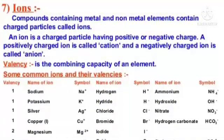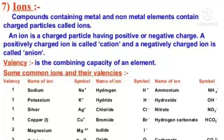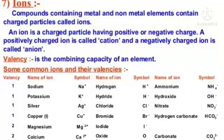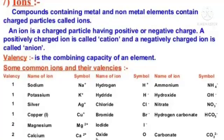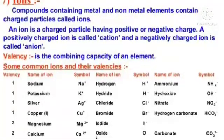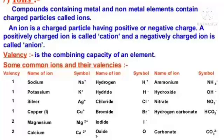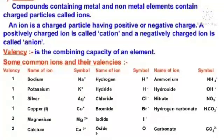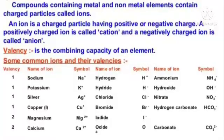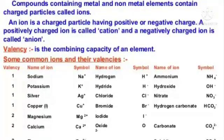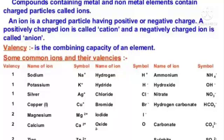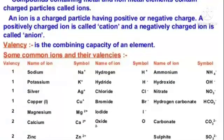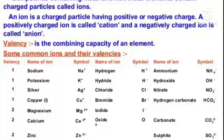Ions: Compounds containing metal and non-metal elements contain charged particles called ions. An ion is a charged particle having a positive or negative charge. A positively charged ion is called a cation and a negatively charged ion is called an anion. Valency is the combination capacity of an element. Some common ions and their valences are shown below.